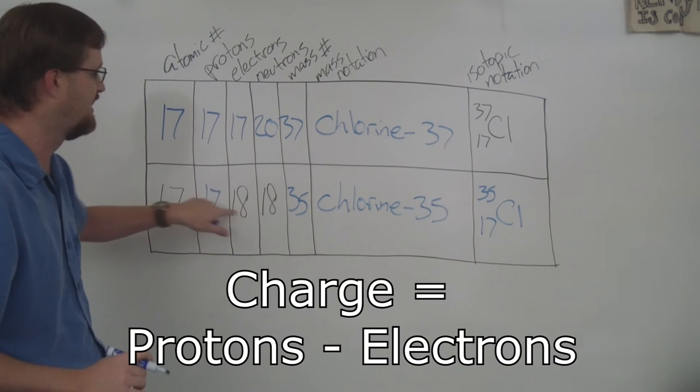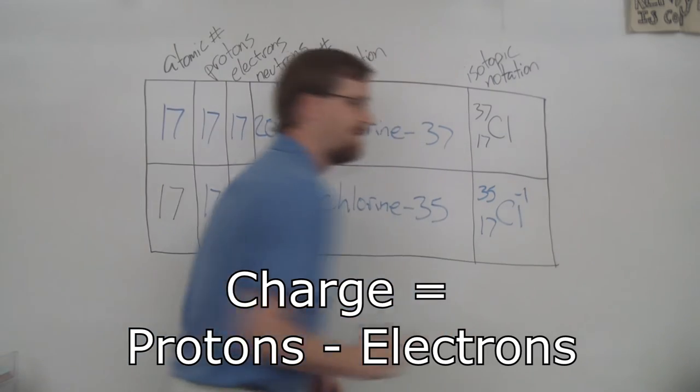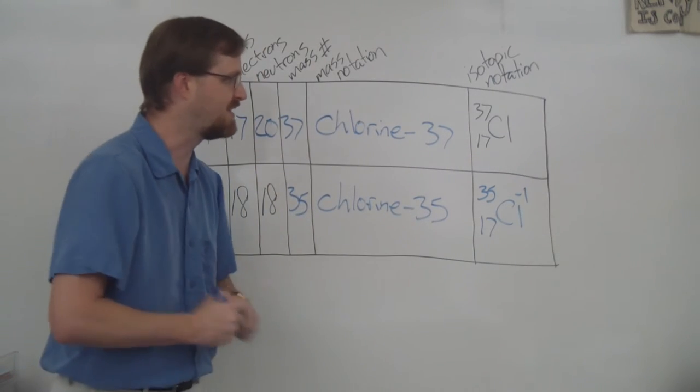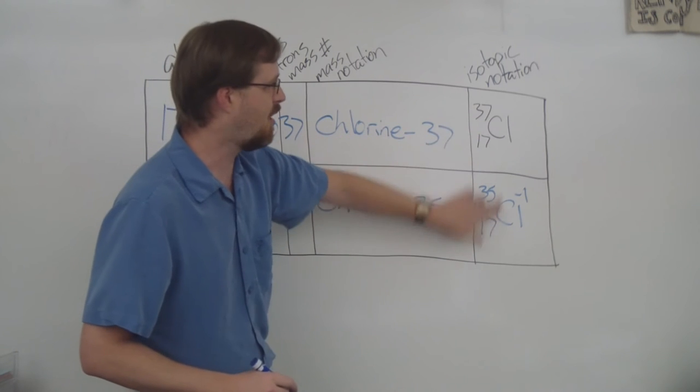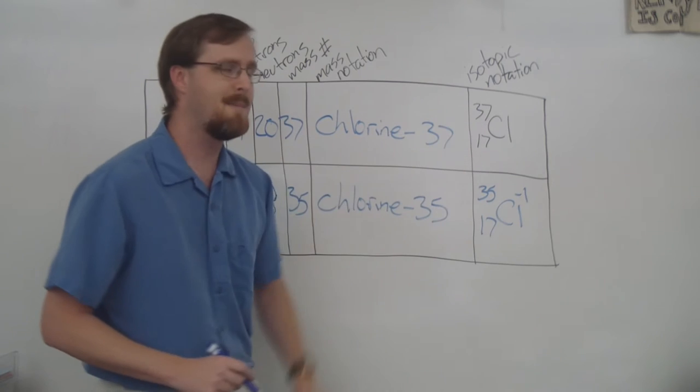So to find the charge, we take the protons minus the electrons: 17 minus 18 is negative one. So if we take a look at these two, these two are both chlorine. They have the same number of protons but a different mass.